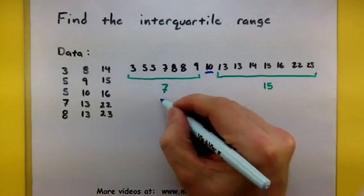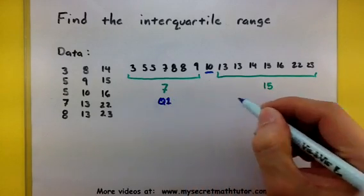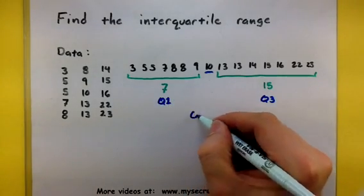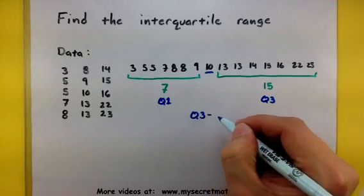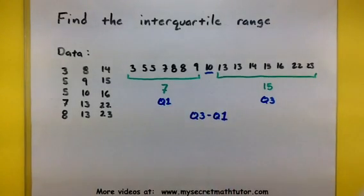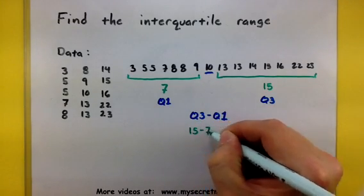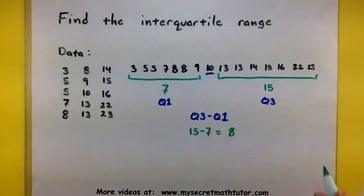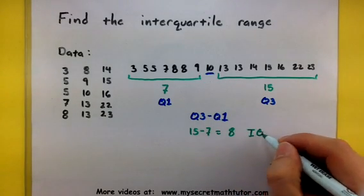Now some books actually give these names, they call them Q1 and Q3. That's okay, because what we're basically going to do is now take Q3 and subtract Q1. So 15 minus the 7. That will give us an answer of 8, and that 8 happens to be our interquartile range.